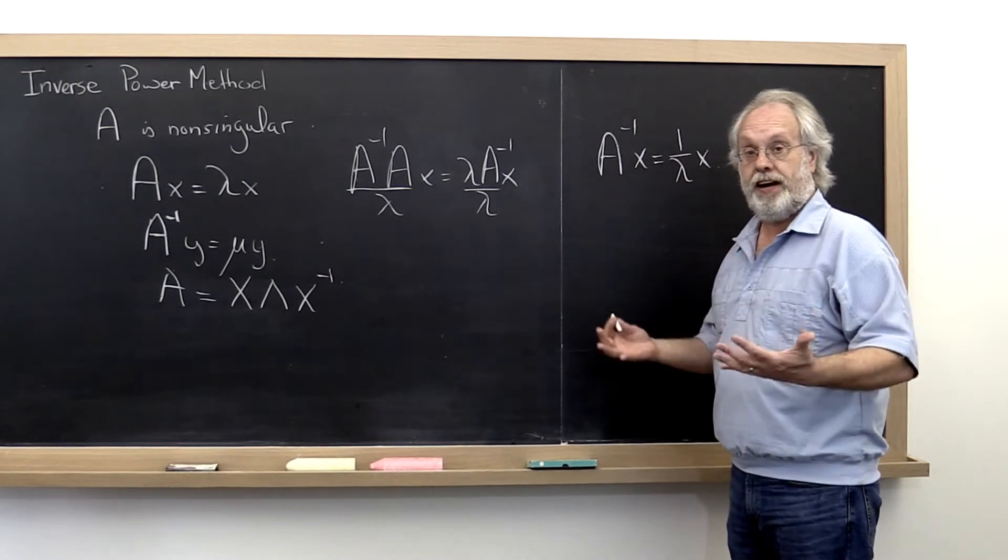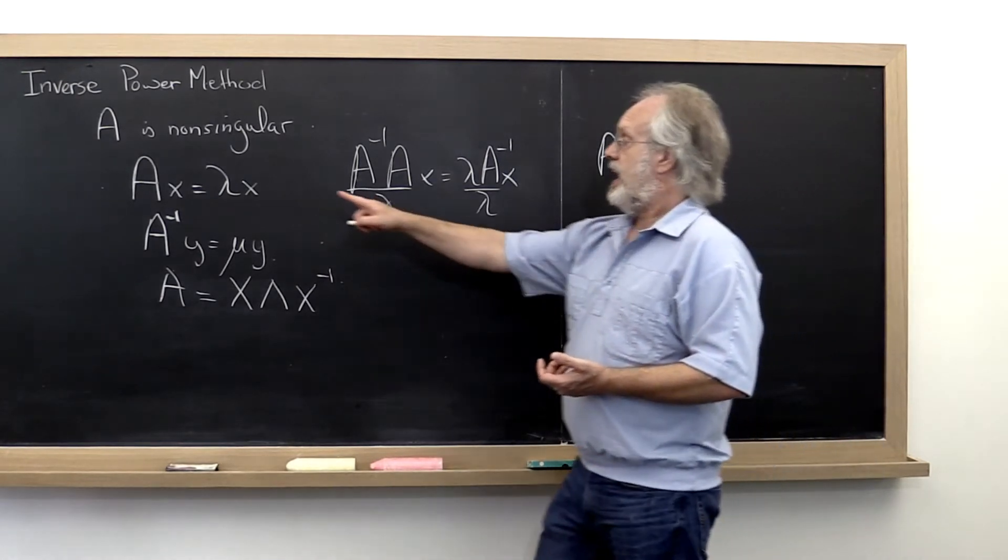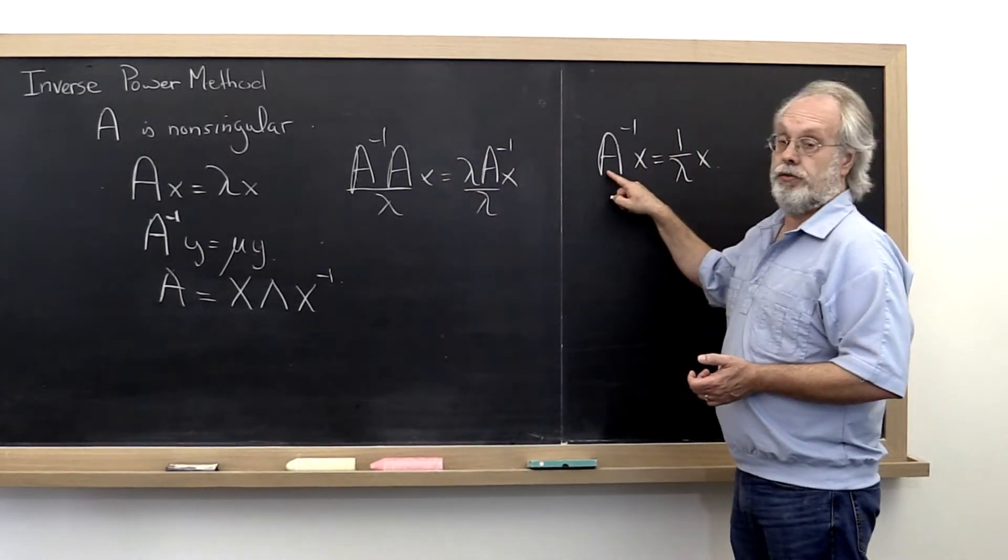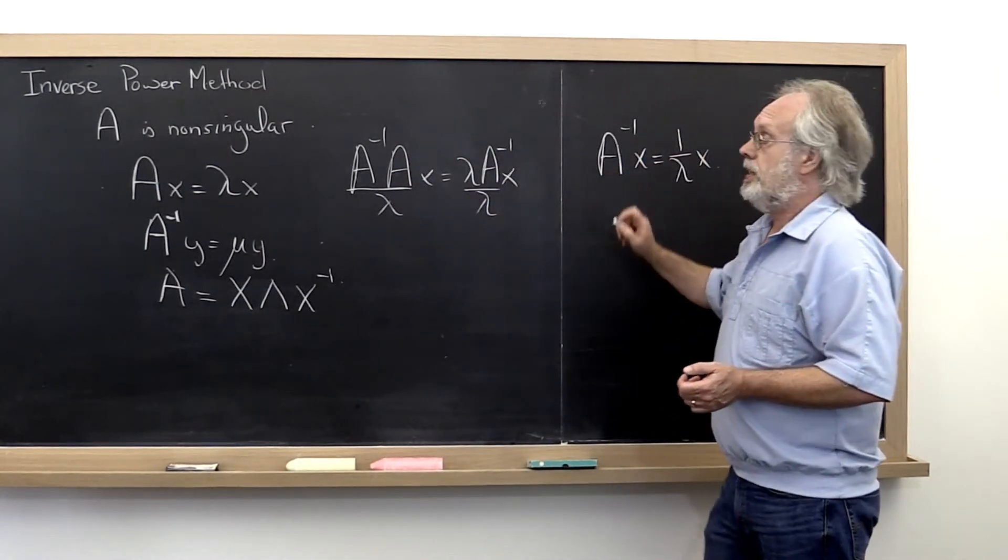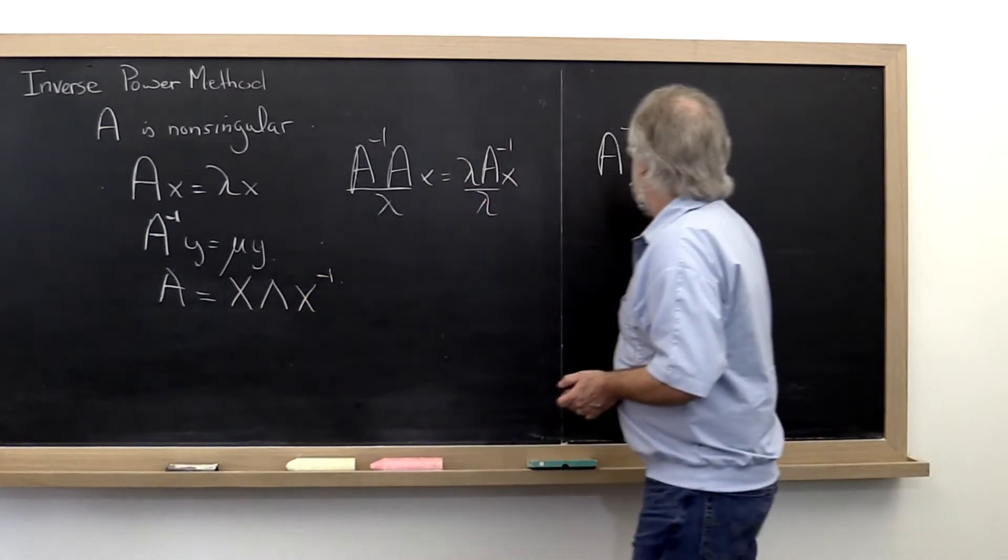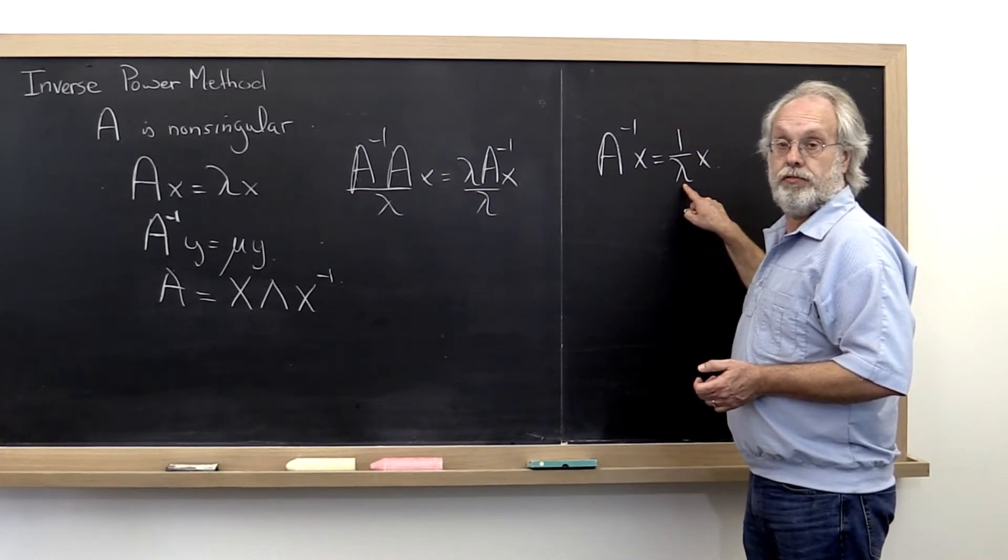what we get is that A inverse times x is equal to 1 over lambda times x. So what do we find out? If x is an eigenvector of A, then x is an eigenvector of A inverse. And if lambda is an eigenvalue of A, then 1 over lambda is an eigenvalue of A inverse.